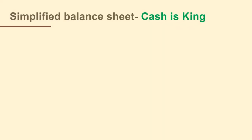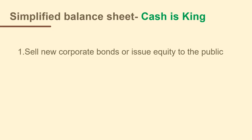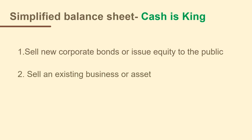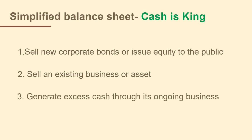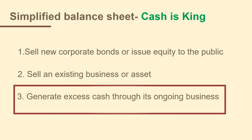Companies use excess cash to expand business operations, acquire new companies, invest in shares of other companies, buy back their stocks, pay cash dividends, or even save it. The three basic ways to create a large stockpile of cash are: 1) sell new corporate bonds or issue equity to the public; 2) sell an existing business or asset; or 3) generate excess cash through ongoing business. When Warren analyzes a business with excess cash and little debt, he bets the company can withstand short-term troubles only if he sees it generating cash through its ongoing business operations.